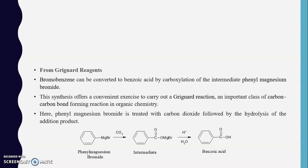In summary, the session covered: the definition and nomenclature of aromatic acids using benzoic acid as the primary example, and three methods for preparation of aromatic acids — first, industrial preparation; second, oxidation of alkyl benzenes; and third, preparation from Grignard's reagent. The remaining preparation methods will be covered in the next video.